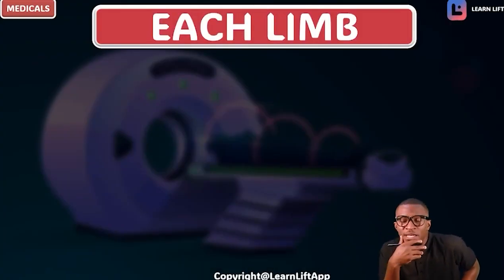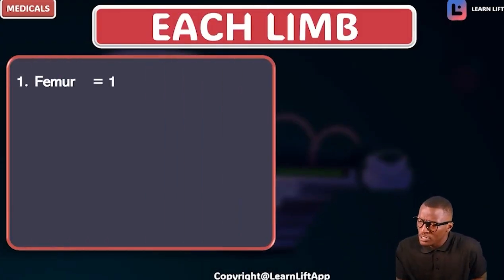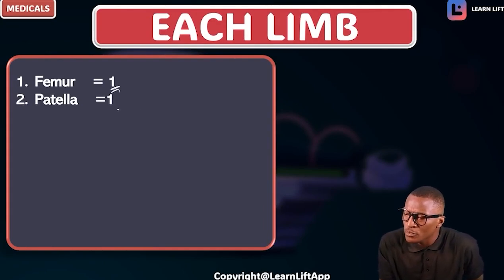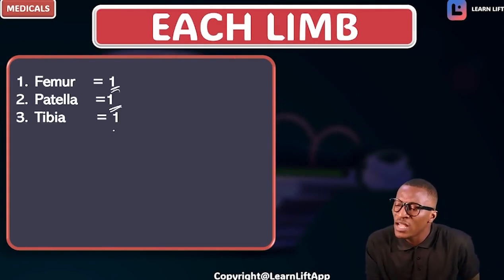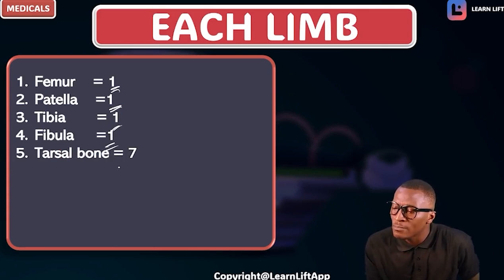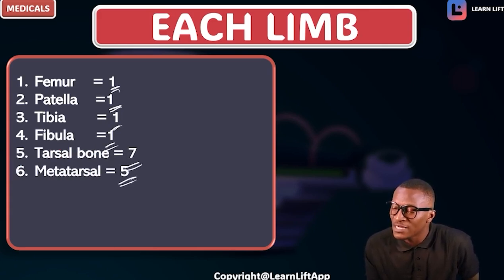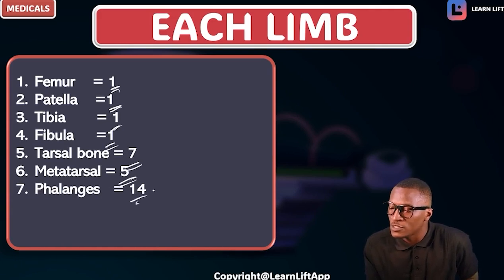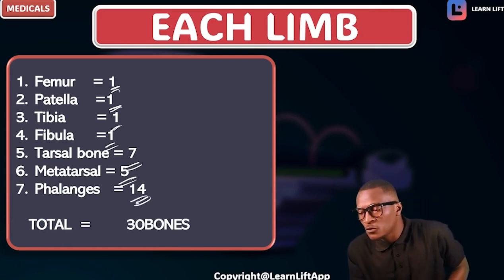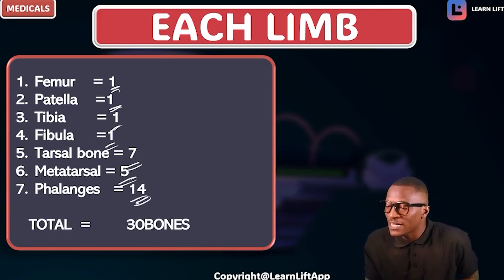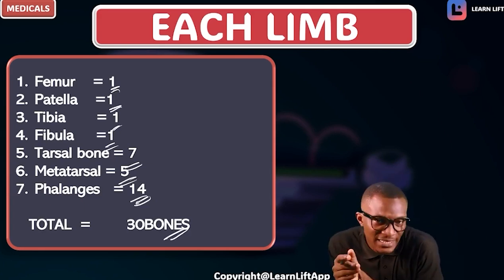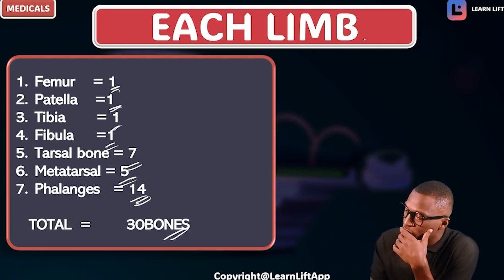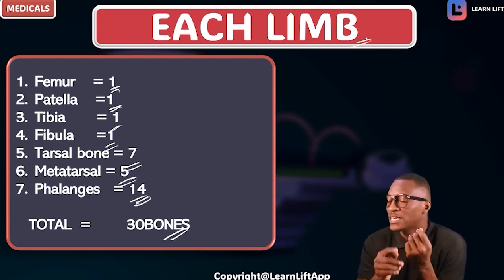Each lower limb has one femur, one patella, one tibia, one fibula, seven tarsal bones, five metatarsal bones, and 14 phalanges. If you total them, we have 30 bones per lower limb.